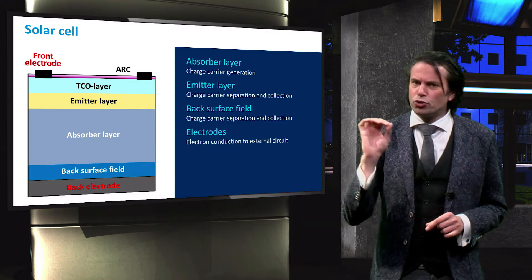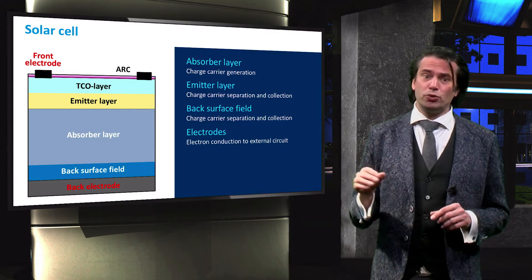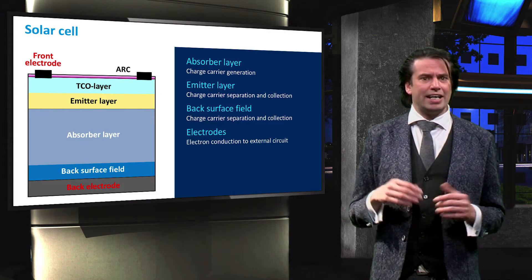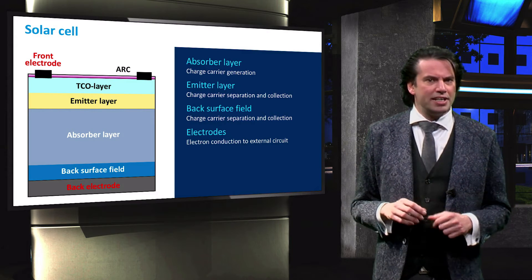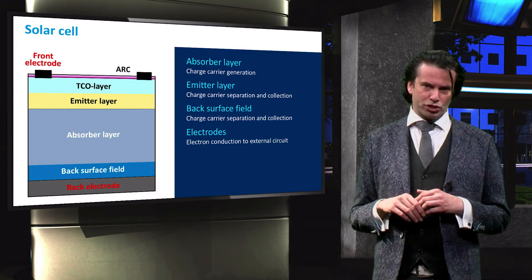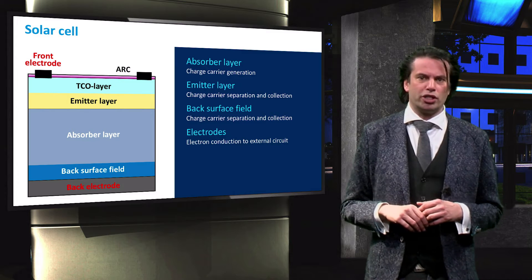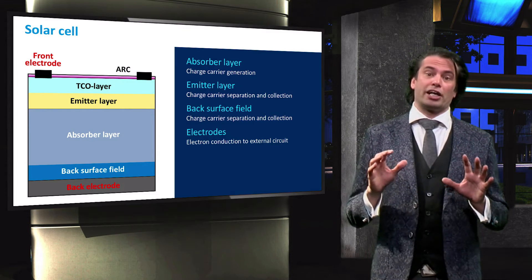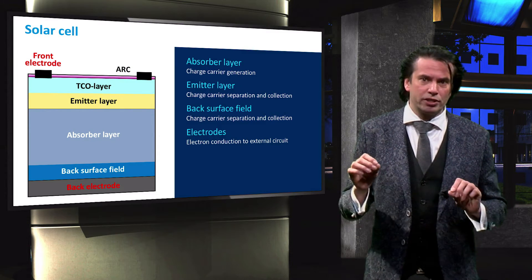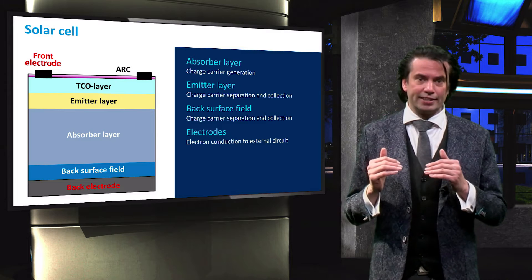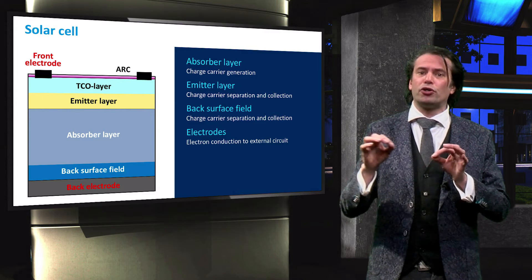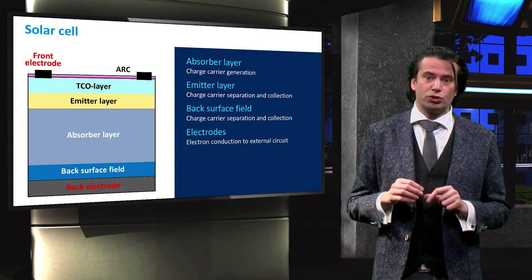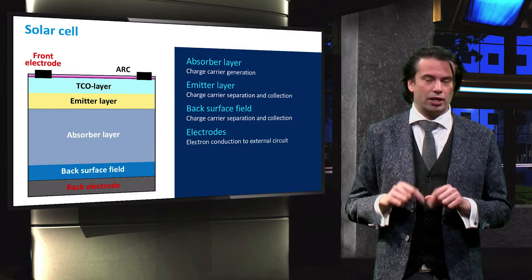In order to collect these carriers and send them to an external circuit, metallic contacts or electrodes are needed at both sides of the solar cell. When a solar cell is connected to an external circuit, the excited electrons will flow through the circuit to recombine with the holes at the other electrode.